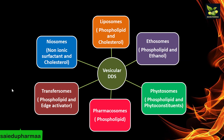Here is a summary of some vesicular drug delivery systems. Liposomes are made up of phospholipid and cholesterol. Niosomes are modifications of liposomes in which non-ionic surfactant and cholesterol are present. In ethosomes, along with phospholipid, ethanol and water are present. In transphosomes, phospholipid has an edge activator. Pharmacosomes have just phospholipids. In phytosomes, as the name 'phyto' suggests, it has phospholipid and phytoconstituents.